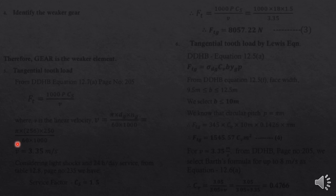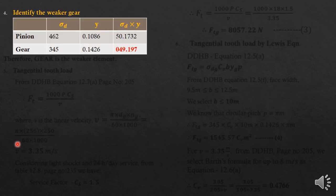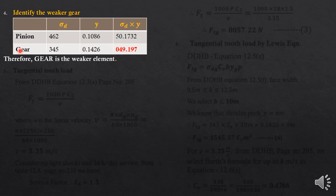To identify the weaker member, we compare the product of allowable static stress and Lewis form factor for both. The smaller value — 49.197 — corresponds to the gear. Therefore the gear is the weaker member.